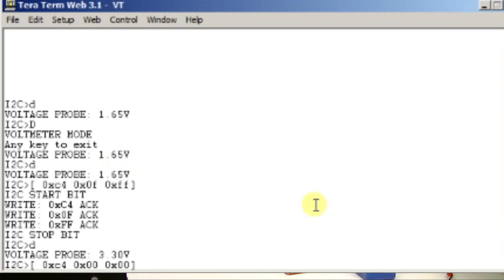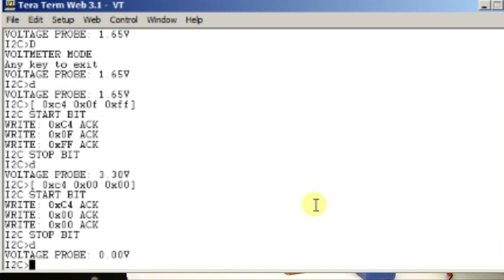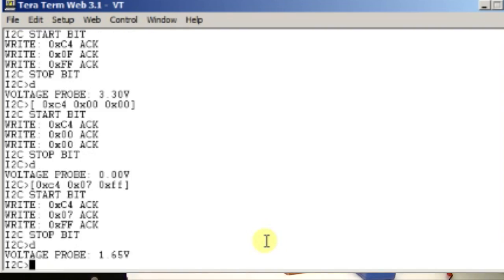Now we'll send the command to turn it off completely, another voltage measurement, 0 volts. Finally, we'll set it for half with the DAC right in the middle. And this is where we were before, 1.65 volts.